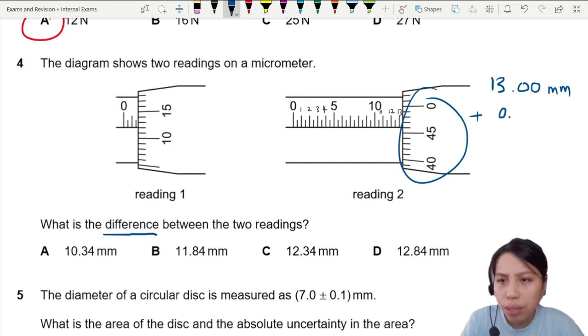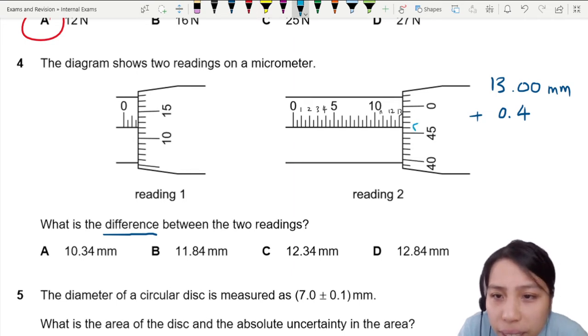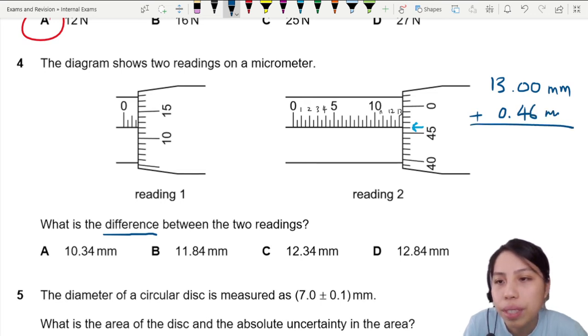So that one, if we read it, is 0.46. I can't really see. 4, 6 I think it is. Yeah, so this is 4, 6. So that's 0.46. Add together. This is how you can read your vernier scale on the micrometer. So 13.46 millimeters.